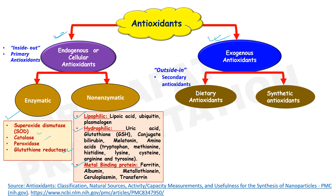Exogenous antioxidants are those provided from outside our body. They can be categorized into two groups: dietary antioxidants and synthetic antioxidants. Dietary antioxidants are secondary antioxidants that we eat, meaning they come from 'outside in.'